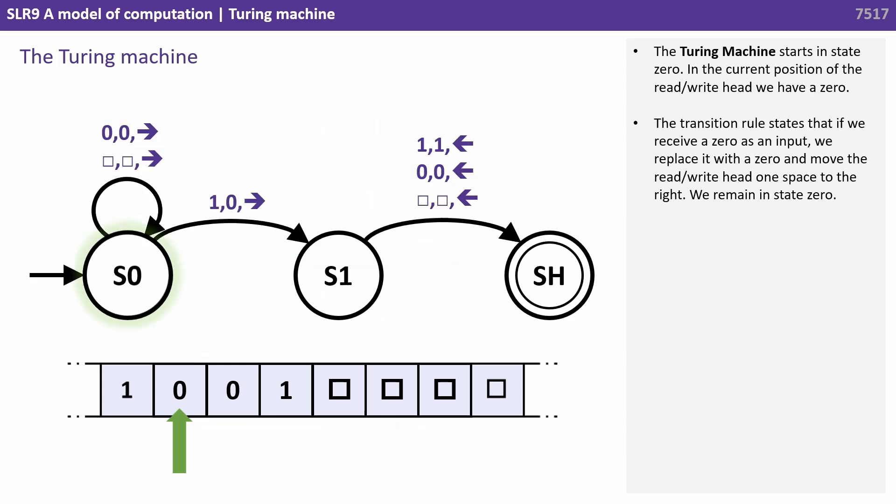The Turing machine starts in state 0. In the current position of the read-write head we have a 0. The transition rule states that if we receive a 0 as input, we replace it with a 0, and move the read-write head one space to the right. We remain in state 0.